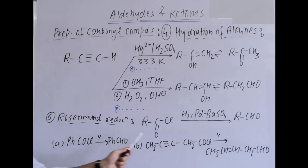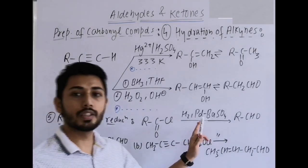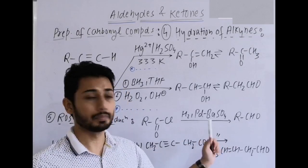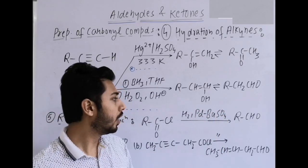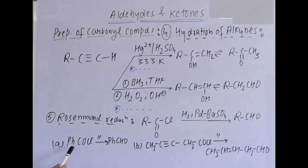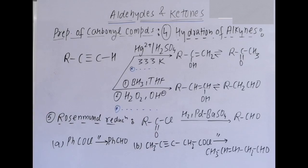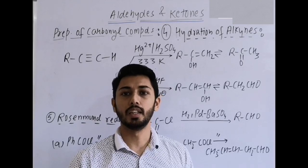Next important named reaction: Rosenmund reduction. Acid chloride (RCOCl) with H2/Pd-BaSO4 (quinoline as poison) — also called Lindler's catalyst — gives RCHO (aldehyde). Example: benzoyl chloride with H2/Pd-BaSO4 gives benzaldehyde. Important note: if a triple bond is present and Lindler's catalyst is used, the triple bond undergoes partial reduction to give a cis-alkene, not full reduction to alkane.